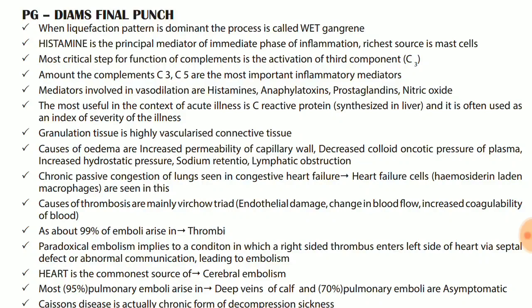Histamine is the principal mediator of the immediate phase of inflammation. Richest source is mast cells. Most critical step for function of complements is activation of complement C3. Complements C3 and C5 are the most important inflammatory mediators.